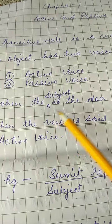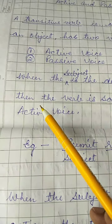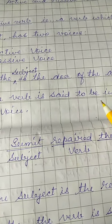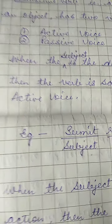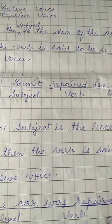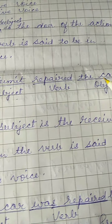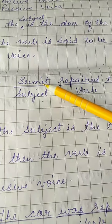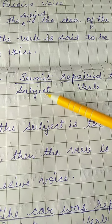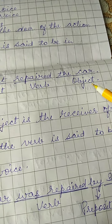What is active voice? When the subject is the doer of the action, then the verb is said to be in the active voice. For example, you can see in your book — 'Sumit repaired the car.' This sentence can be broken up into three parts: Sumit is the subject, repaired is the verb, and the car is the object.